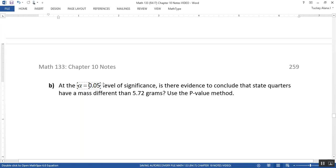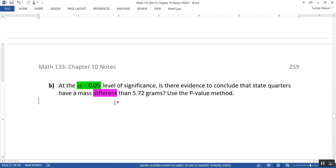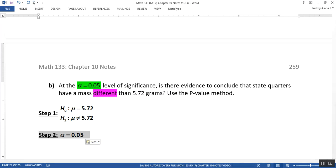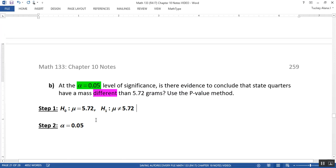Okay, so at the 0.05 level significance, that's interesting. Is there enough evidence to conclude that the state quarters have a mass different, there's another interesting point, than 5.72 grams? So I highlighted those two words because they're going to help us figure out parts one and two. We're talking about having a mass different than 5.72 grams. That's not a proportion problem, that's going to be a mean problem. And we also know that alpha is 0.05.